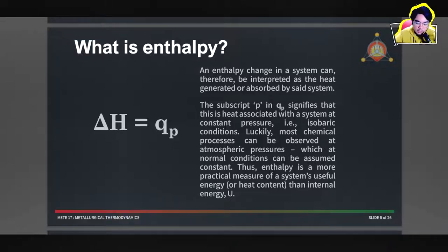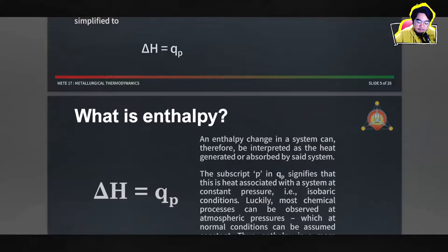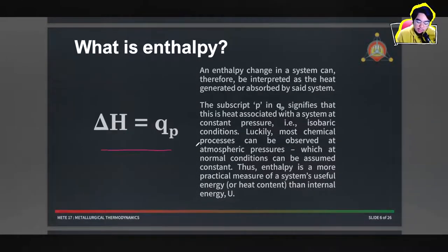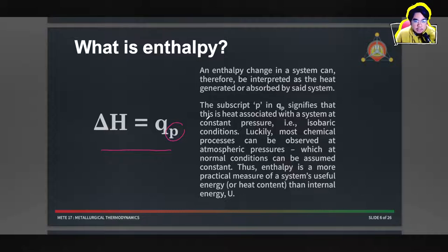Let's start with the basics first. What is enthalpy? Essentially, we end up with delta H equals Q sub P. What this is saying is that the change in enthalpy can be interpreted as just the heat generated or absorbed by a system when it undergoes a certain process. The P here signifies that the heat associated with that system change is done at constant pressure, which is convenient because most systems are done at atmospheric pressure, which can be considered as constant pressure.